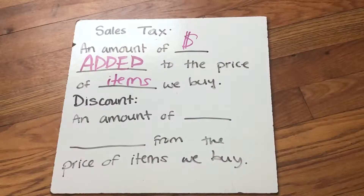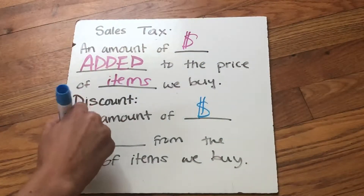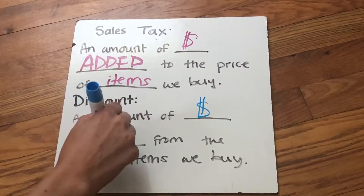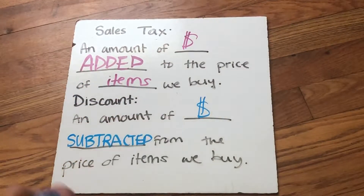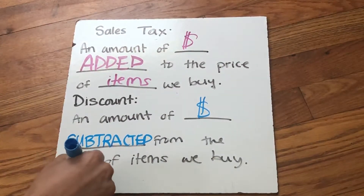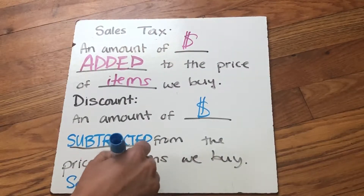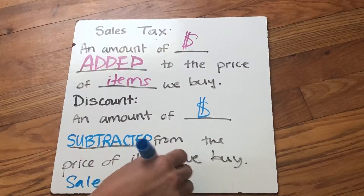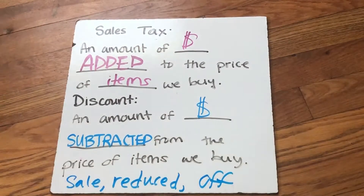Discount is the opposite. Discount is when an amount of money is subtracted from the price of the items we buy. So if a store is having a sale, if something's on sale, another word we use is reduced. Or sometimes you'll see the word off — 50% off, 75% off. Those are all discount words.